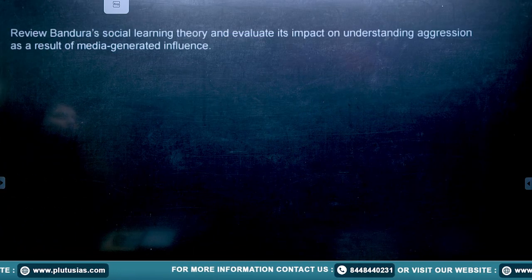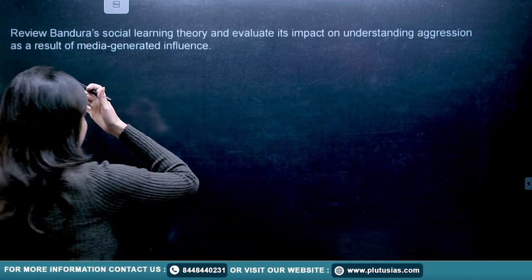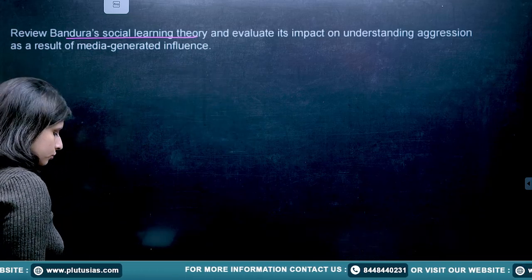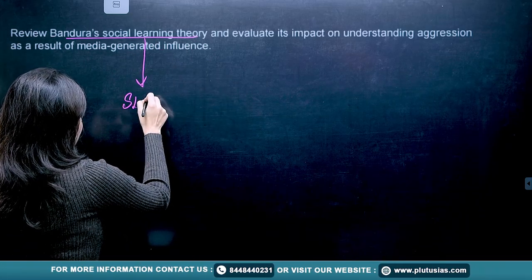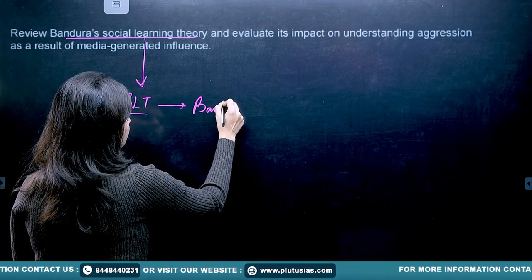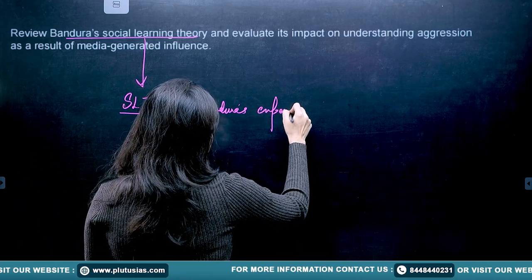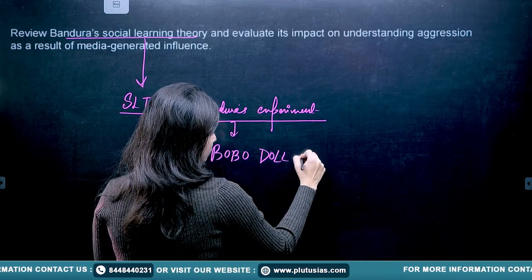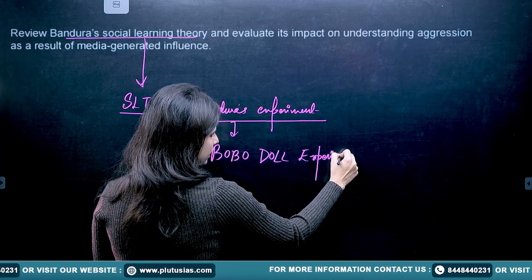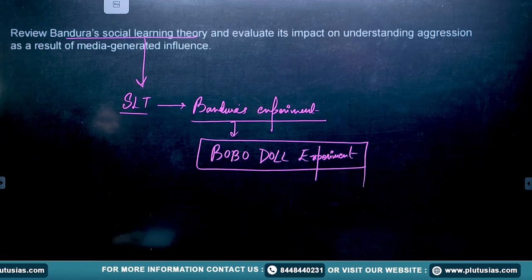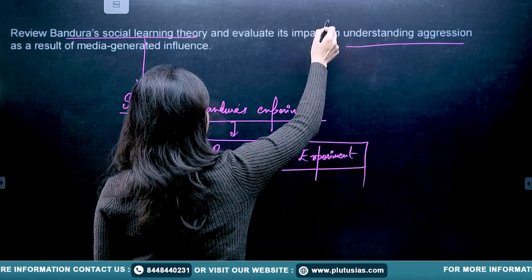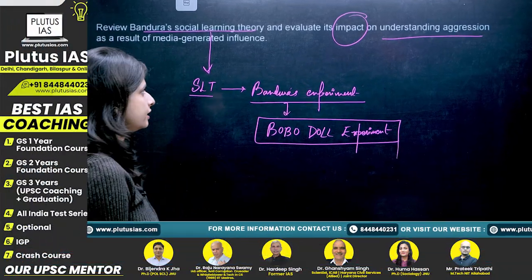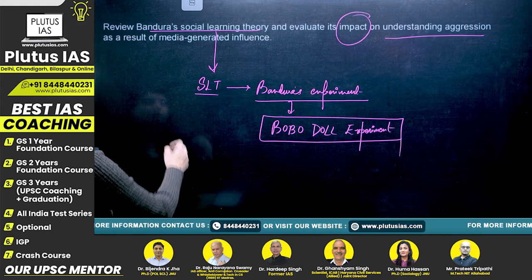The next question says: 'Review Bandura's social learning theory. Evaluate its impact on understanding aggression as a result of media-generated influences.' This question is very beautiful because it covers three aspects. First, you need to explain what social learning theory is. Second, you need to talk about Bandura's experiment — all psychology students must know about the Bobo Doll experiment.